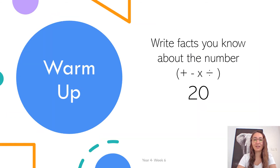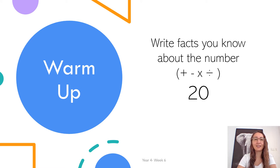For our warm-up, I'd like you to write facts you know about the number 20. It can be anything — it could be that it's even, it could be that it is double 10. You could create sums using plus, take away, times and divide. Anything that relates to the number 20. You might even give yourself a timer challenge — put the timer on for two minutes and come up with whatever you can. Make it as fun and exciting as possible. Enjoy and I'll see you on the next slide.